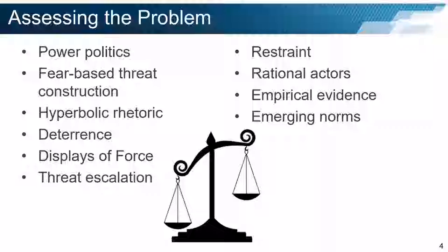Oftentimes, any time an attack happens, it is described as the most dangerous attack or the most dangerous threat to the country at this time, when often that may not be the case. States are trying to build deterrence frameworks in order to deter hostile acts in cyberspace. They are making displays of force, and these displays of force can often lead to threat escalation. During this course, we will attempt to determine the real state of affairs in cyber conflict, look at concepts like restraint and rational actors, use empirical evidence to define what is actually happening, and look at emerging norms in cyberspace.